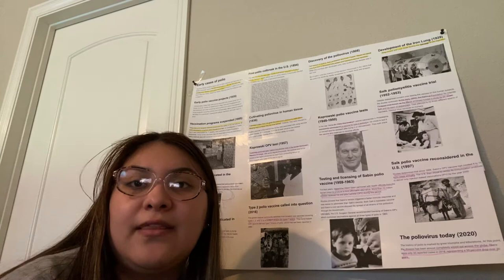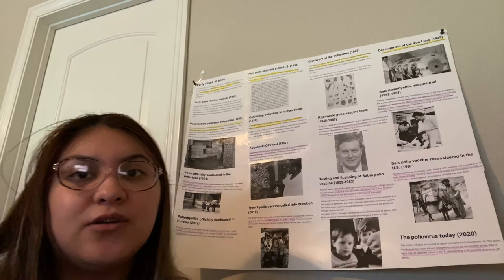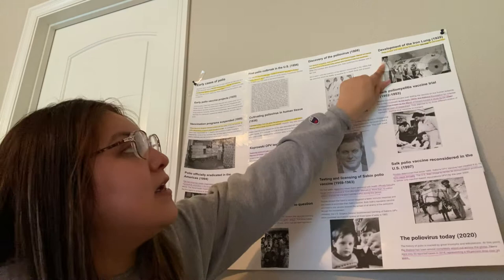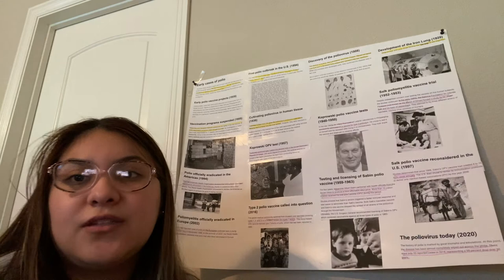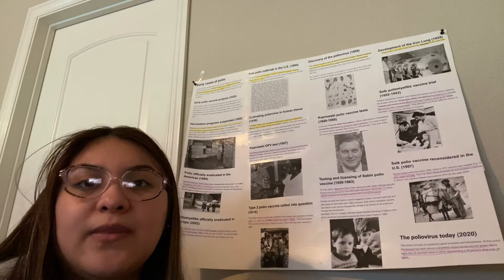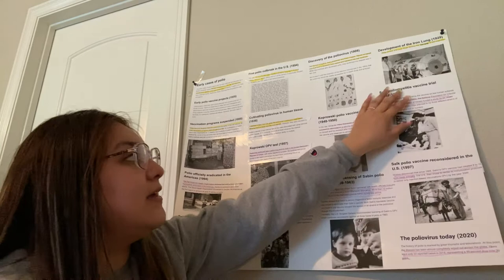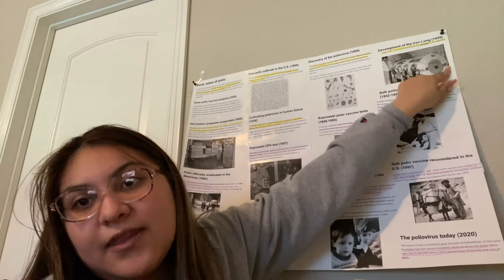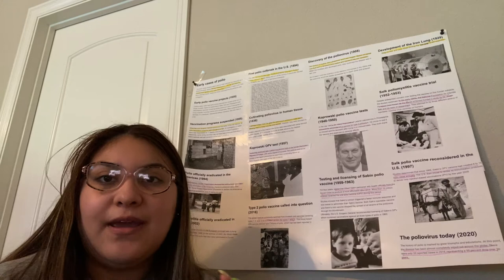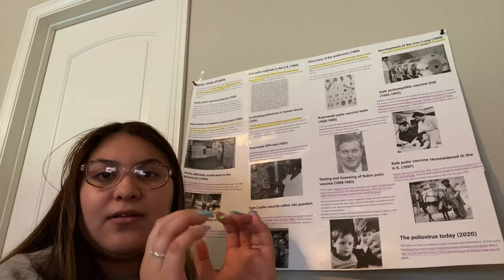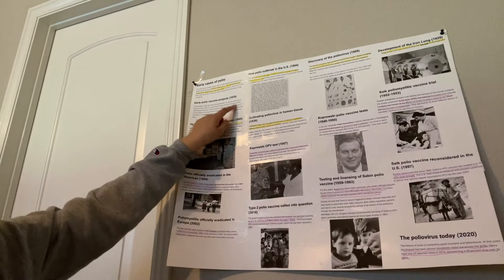Fun fact: they had to use the electron microscope — they couldn't use any other microscope to see the organisms until the electron microscope was invented. Moving on to 1929: this is a picture of an iron lung. It was used to help polio patients who suffered from their respiratory tract being attacked. Basically, they would stick their whole body inside except for their head, which had to be poking out. It would go in and out, inhaling and exhaling for them.